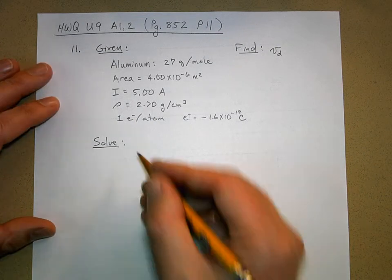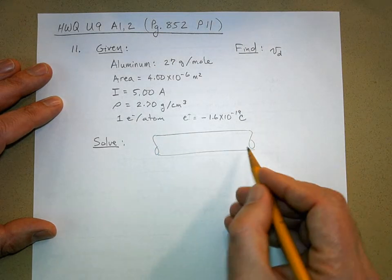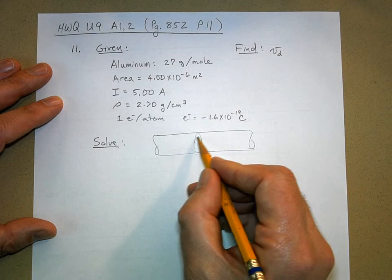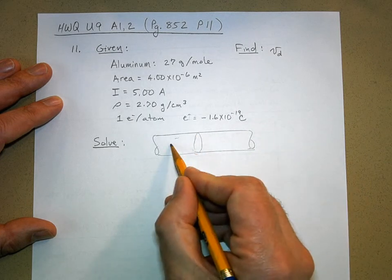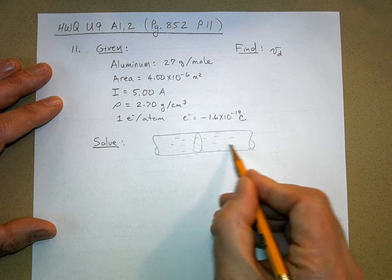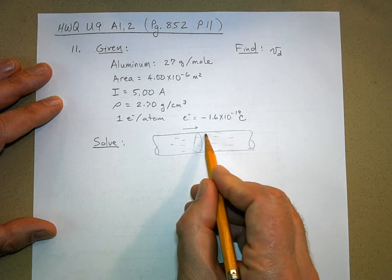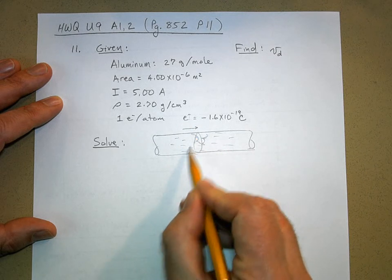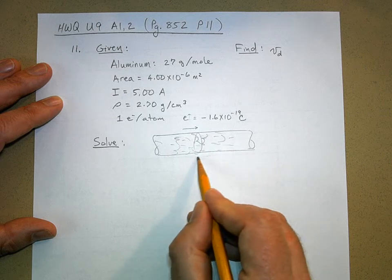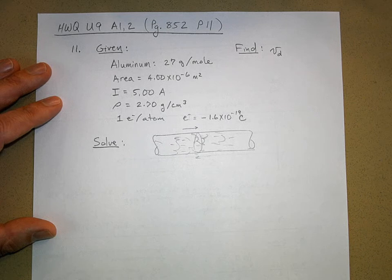The area of the wire is given, the current is given, the density is given, and we have one electron per atom. That's important. One charge carrier available per aluminum atom. And I just wrote down the charge of the electron. So we have, here's some wire, right? And it's got some cross-sectional area.